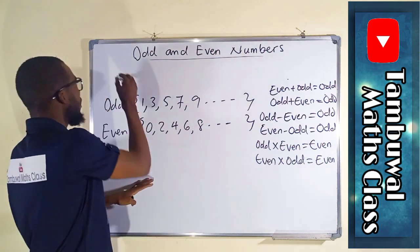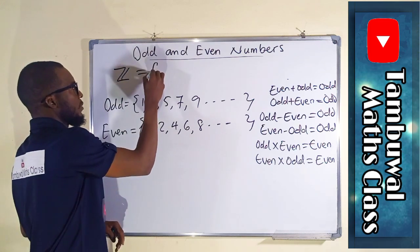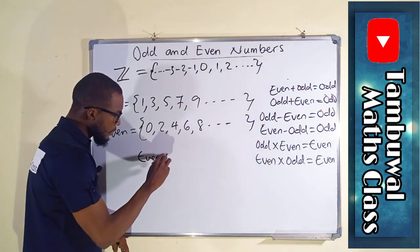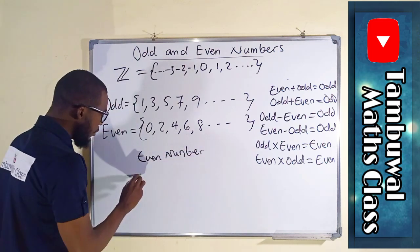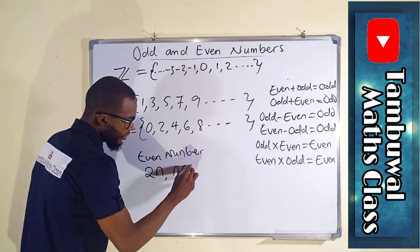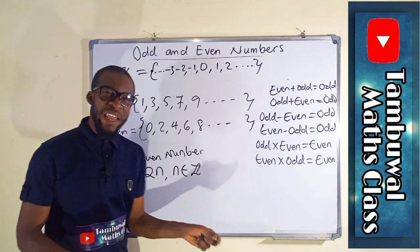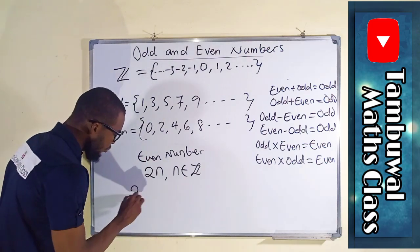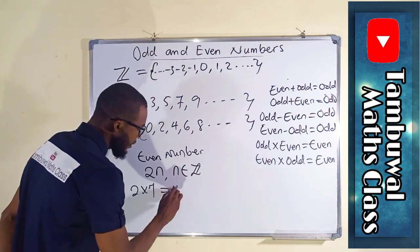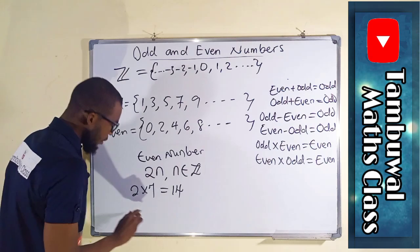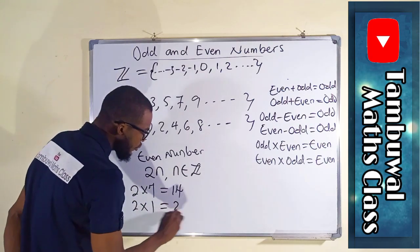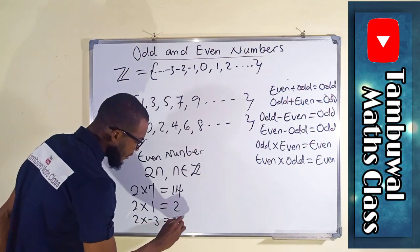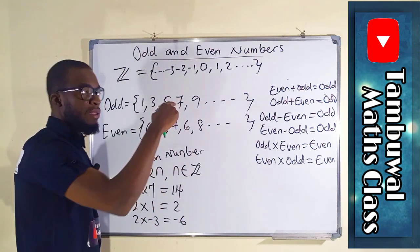And therefore we have to consider the set of integers. Generally, an even number is equal to 2n, for which n belongs to the set of integers. This means any number you pick at random from the integers and multiply it by 2, you shall obtain an even number. For example: 2 times 7 gives 14, an even number. 2 times 1 gives 2, an even number. 2 times negative 3 gives negative 6, which is an integer and is regarded as an even number.